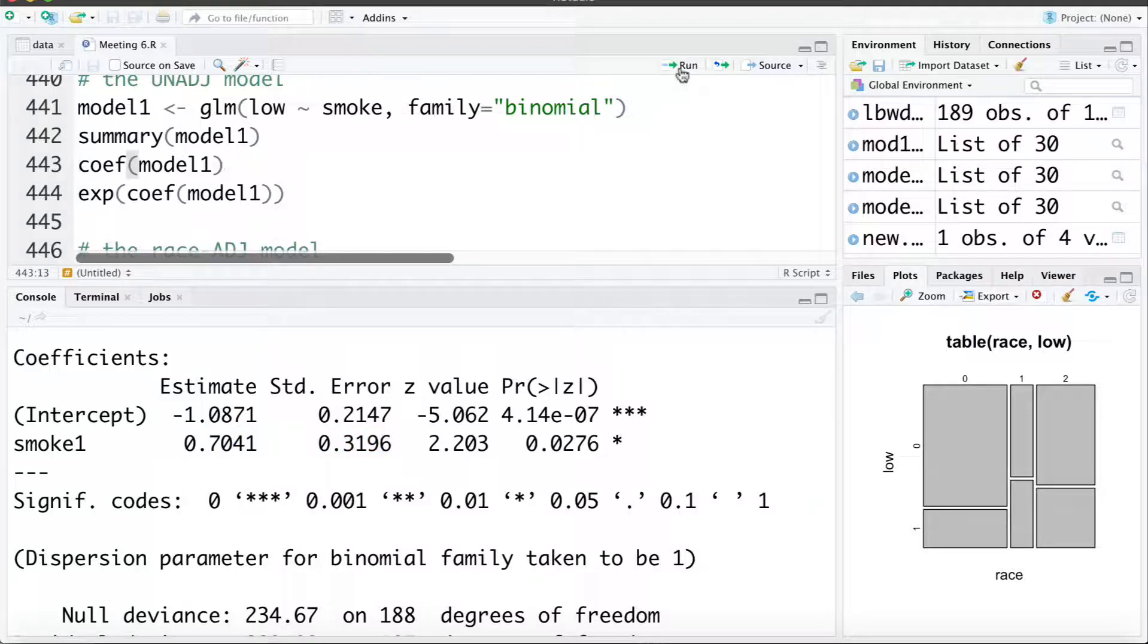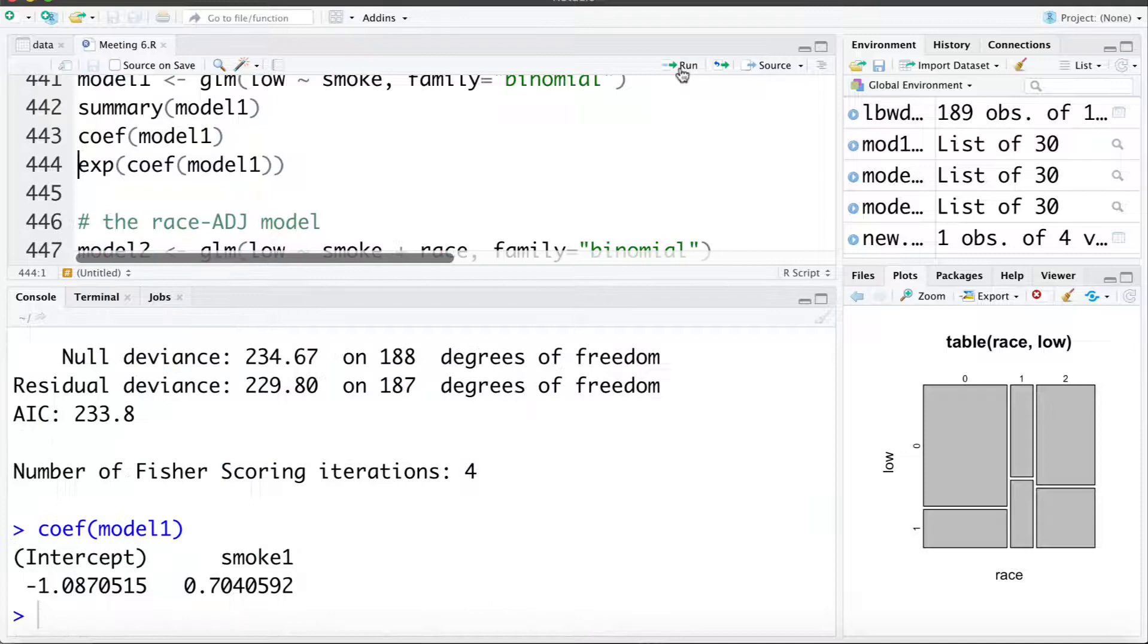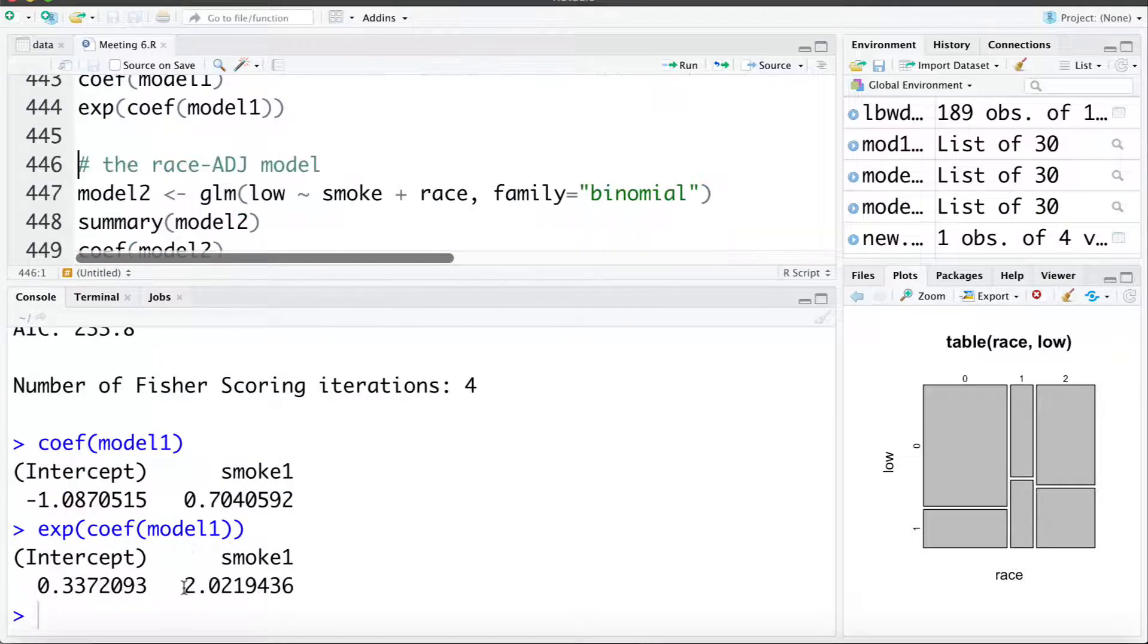And just a reminder you can also ask for the coefficients directly this way. And if we exponentiate the coefficient it's going to give us the odds ratio. So the unadjusted odds ratio for smoking is 2.02. A smoker has about double the odds of a low birth weight baby than a non-smoker.